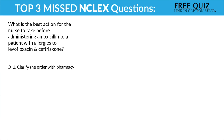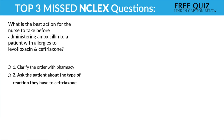Option two: ask the patient about the type of reaction they had to ceftriaxone. Yes, this is the correct option because cephalosporins and penicillins have cross-sensitivity, aka allergies. The NCLEX key term here is to clarify or assess the patient first. In this case, we're assessing the type of reaction — specifically the deadly anaphylactic reaction involving respiratory issues is what we're looking for.